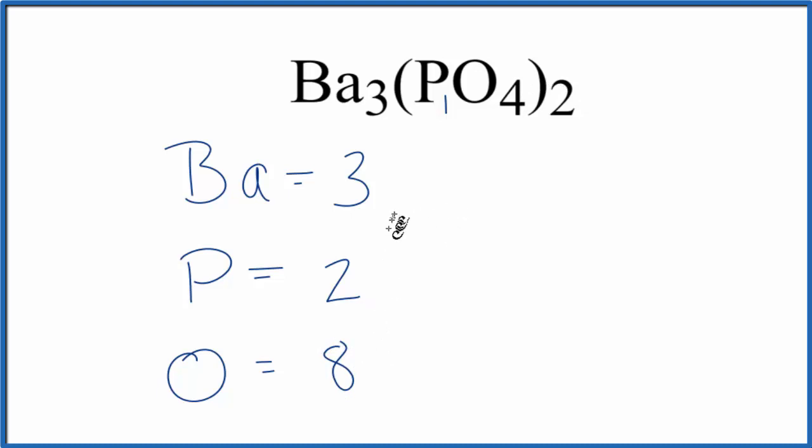If you wanted to figure out how many barium atoms there were in barium phosphate, you just multiply the number of atoms, the 3 here, times Avogadro's number. So 3 times Avogadro's number, this is the number here, the number of barium atoms in 1 mole of barium phosphate.